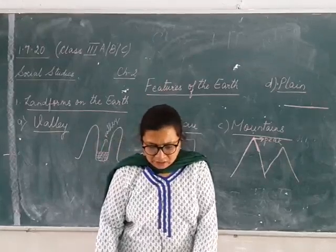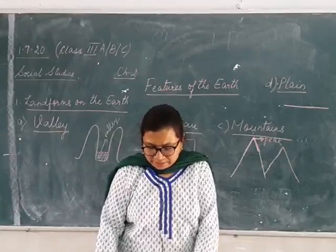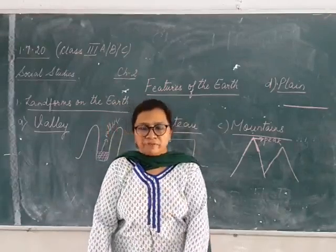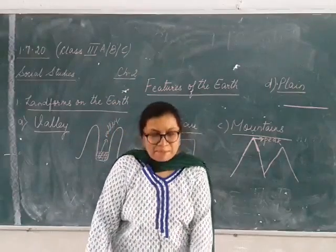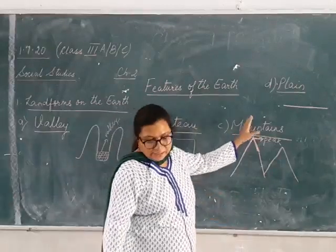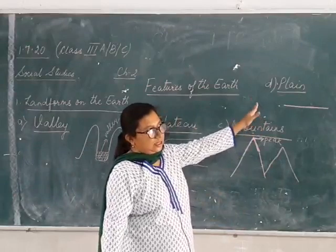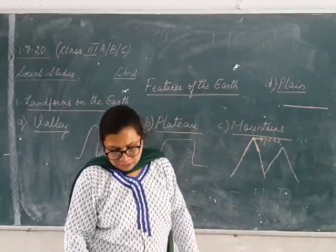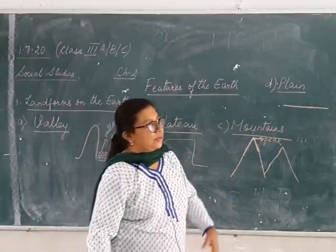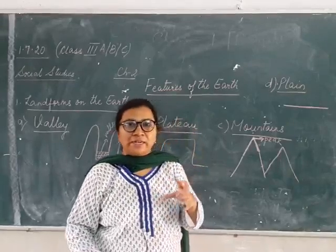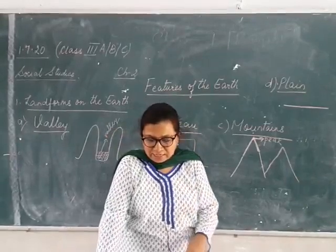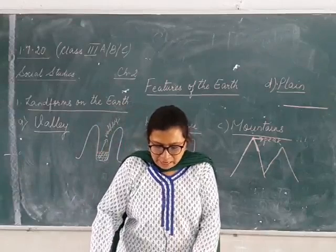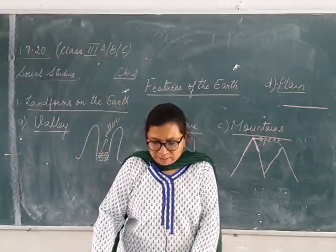The Indo-Gangetic plains, also known as the northern plains, are large and fertile. 'Indo' means India, and 'Gangetic' comes from the word Ganga. So the plain area found in India in the Ganga region — where the Ganga river flows in the northern part of India — is known as the northern plains. It is very fertile, very big in size, and encompasses most of northern and eastern India.